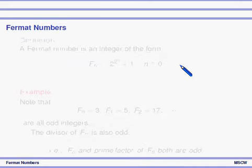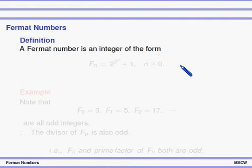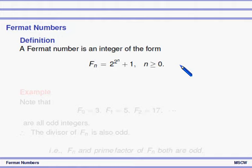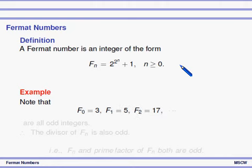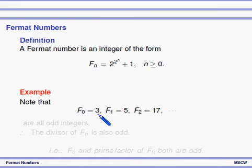Let us glance at the previous class — what is a Fermat number? A Fermat number is an integer of the form 2^(2^n) + 1 for all n ≥ 0. For example, taking n = 0, 1, and 2, we can find F0, F1, F2. Note that F0 = 3, F1 = 5, F2 = 17 — all Fermat numbers are odd numbers.